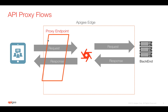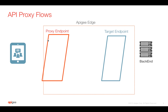There is a proxy endpoint and a target endpoint in Apigee Edge when you create an API proxy. The proxy endpoint has different flows, and the API request and response go through these different flows. The proxy endpoint is divided into pre-flow, conditional flow, and post-flow.